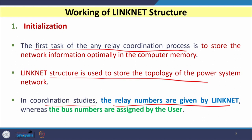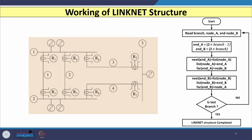When we use the link net structure, relay numbers are given by the link net structure, whereas bus numbers are assigned by the user. Link net structure contains two algorithms: the first algorithm calculates certain variables or parameters, and the second algorithm determines primary relays and calculates backup relay pairs — that is, which relay provides backup and which is the primary relay.